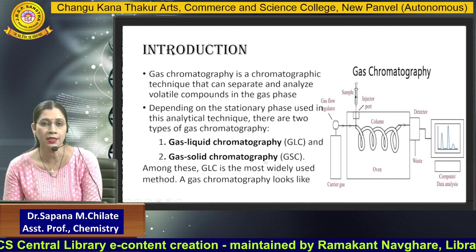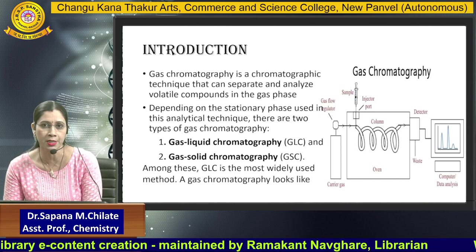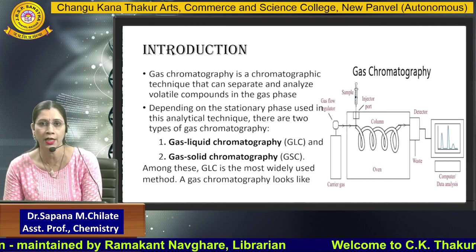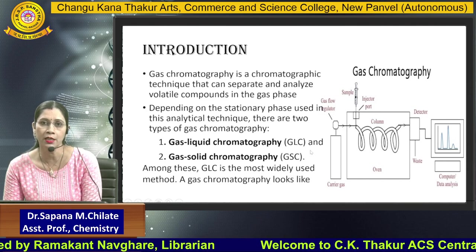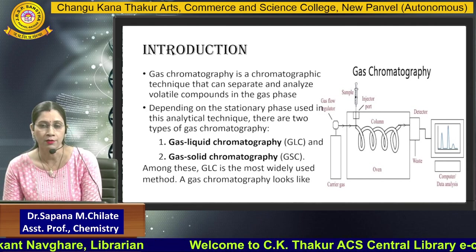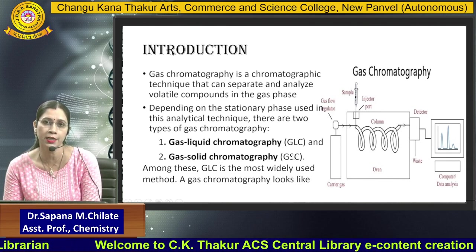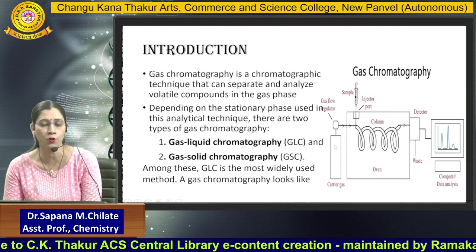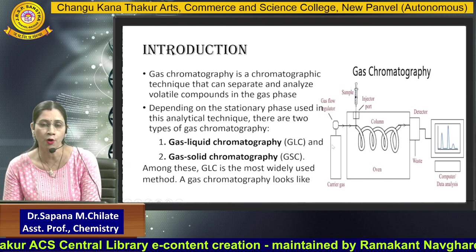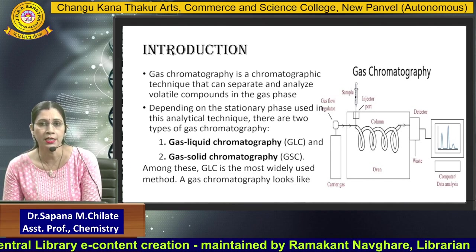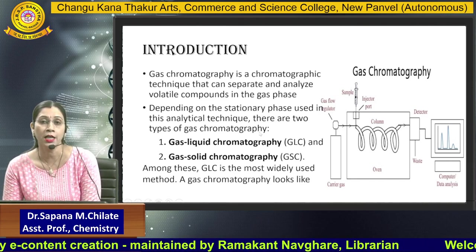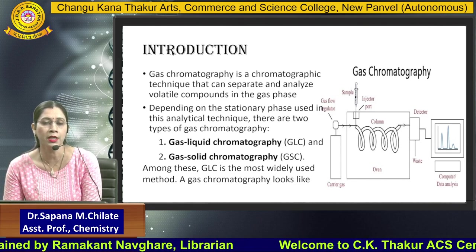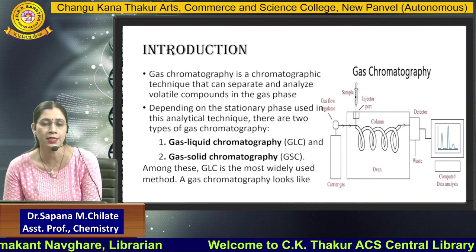This technique is a temperature-programmed system where we can estimate different substances depending upon their adsorption and desorption rate. The column used here should be a coil structure because we are heating it, and different components separate out based on their adsorption and desorption rate. The column is placed in an oven and can be heated from 20 degrees Celsius up to 2000 degrees Celsius. Thereafter the detector is present, and waste can be collected through a waste collector, followed by a recorder system and computer for data analysis.